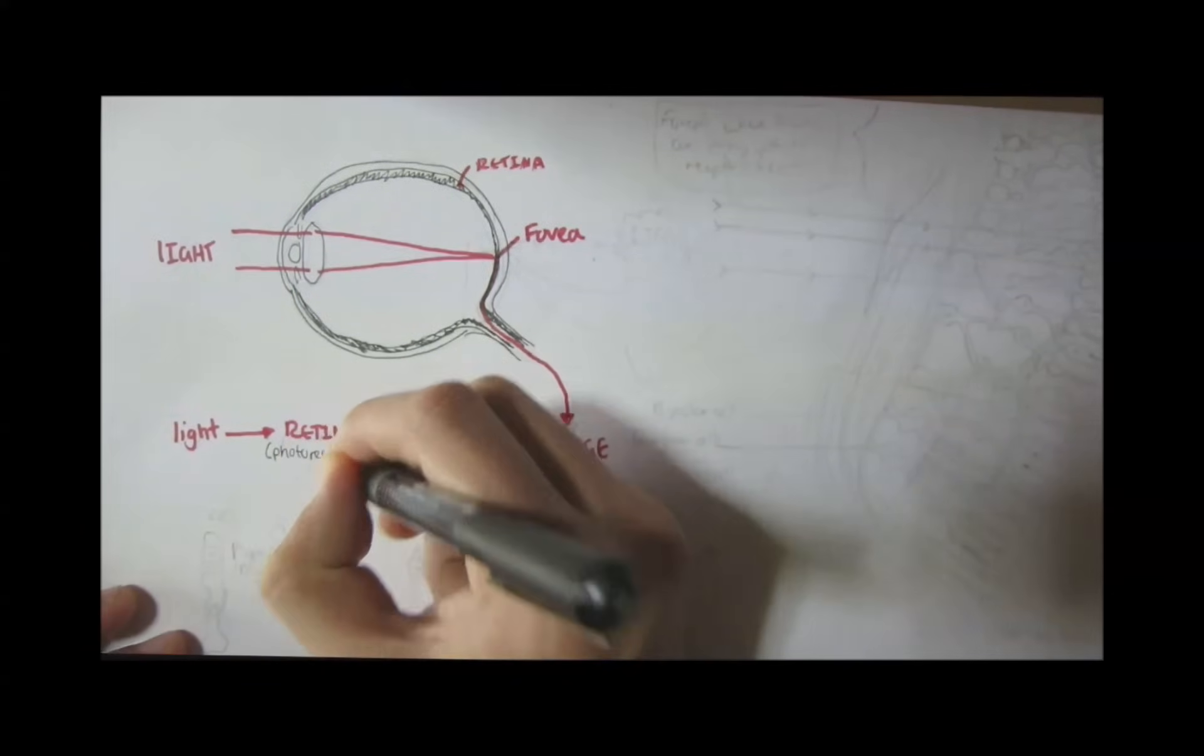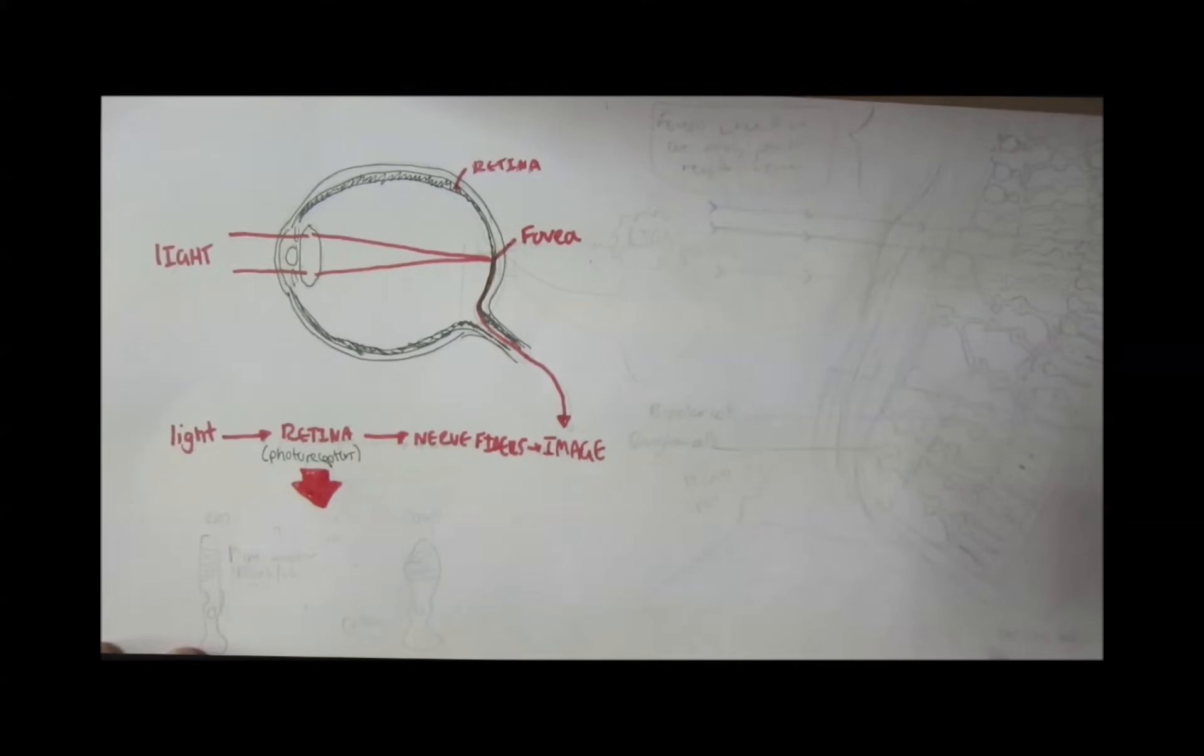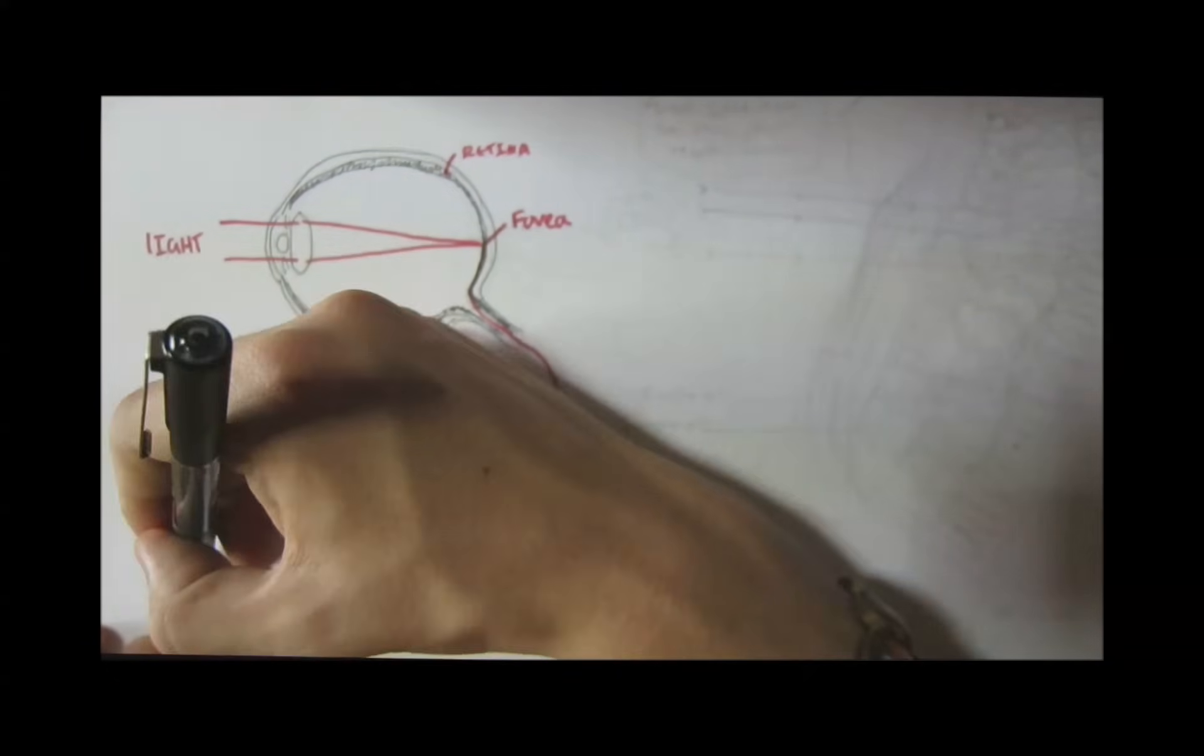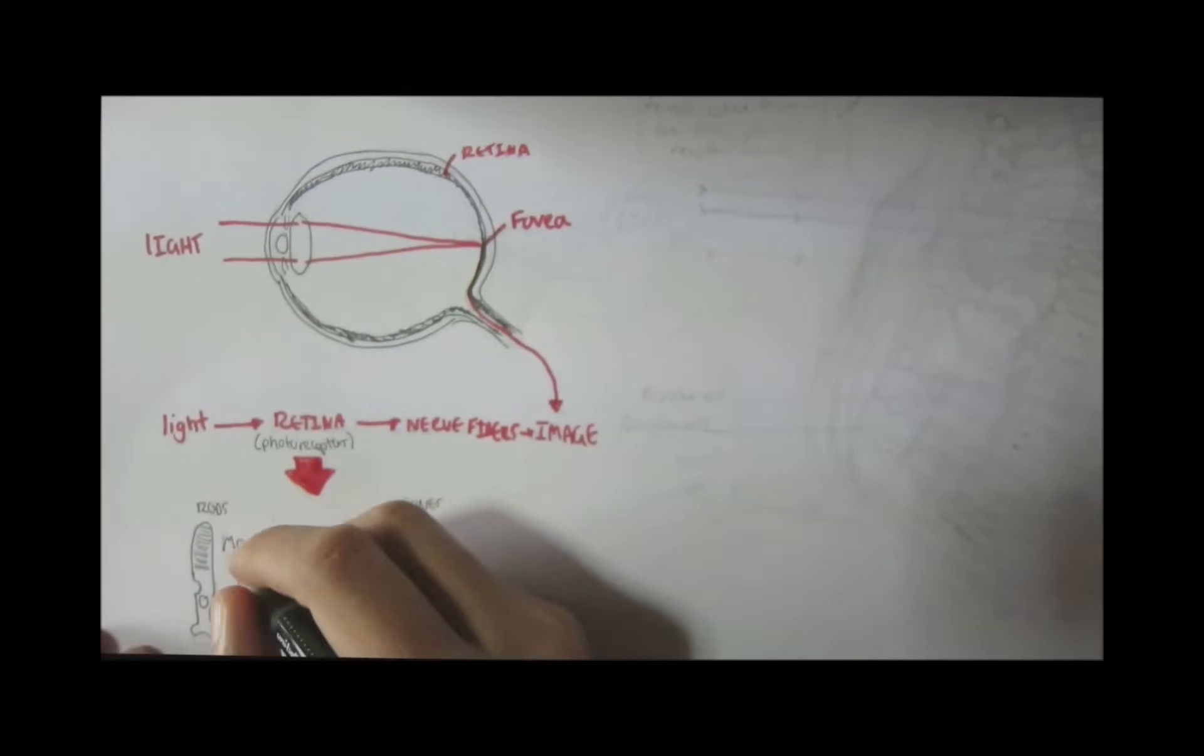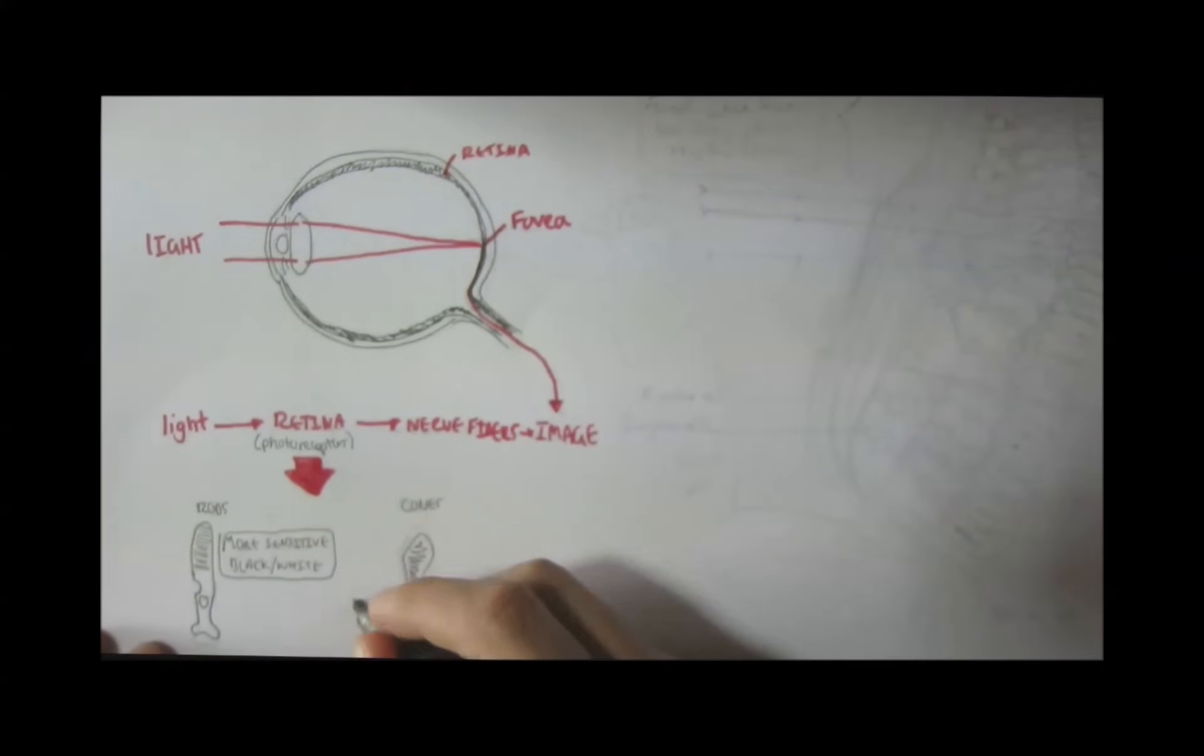There are two main types of photoreceptors in the retina. There are the rods and the cones. Now, the difference between them is that the rods are cells which receive white and black colors. They are also the more sensitive receptors. While the cones, this chunky looking thing, are the color cells.